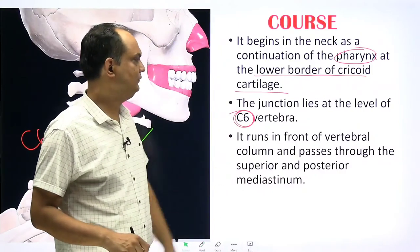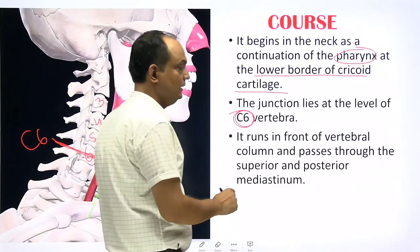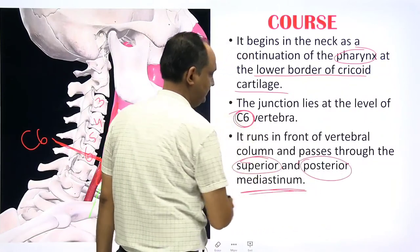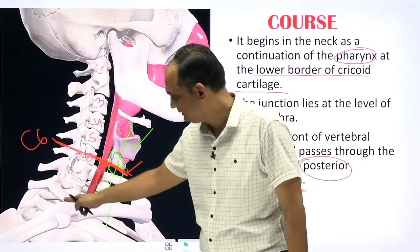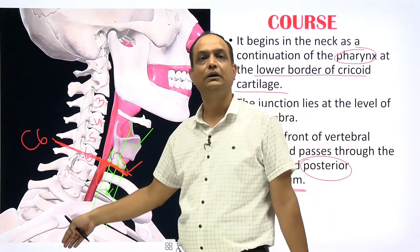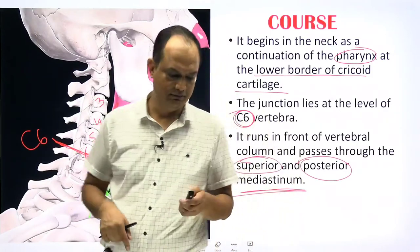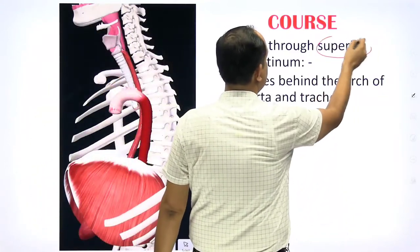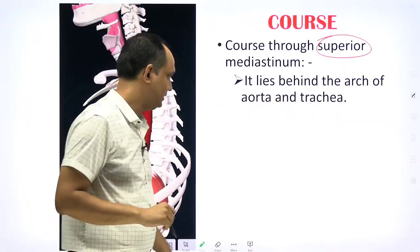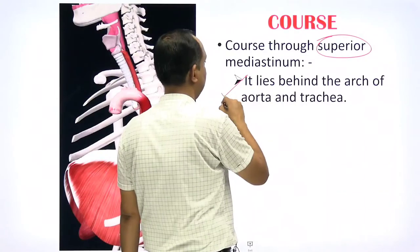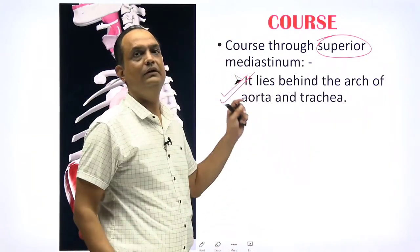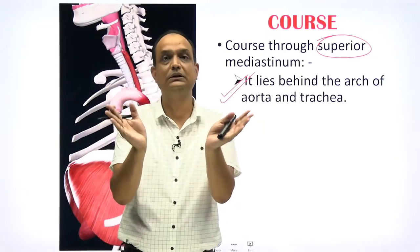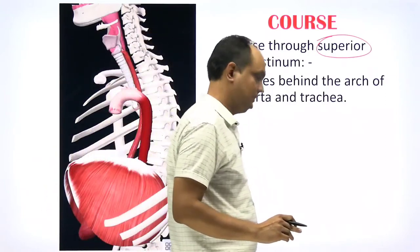The esophagus then runs in front of the vertebral column, enters the thoracic cavity, and is present in the superior and then posterior mediastinum. In the superior mediastinum, it lies behind the arch of aorta and trachea — this is an important relation when reading the course.